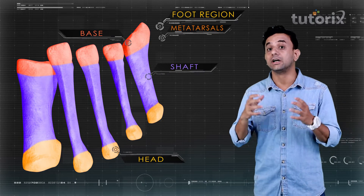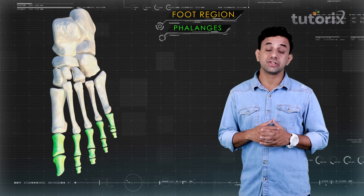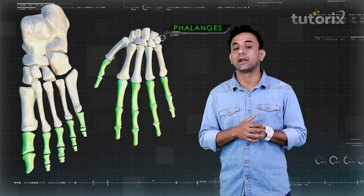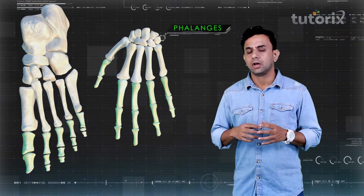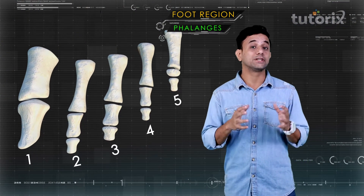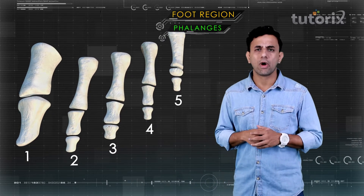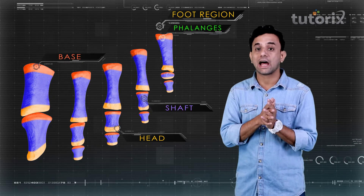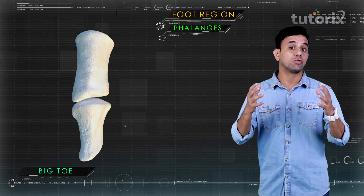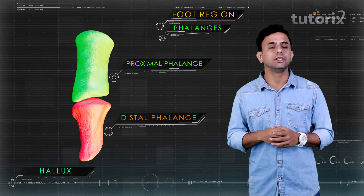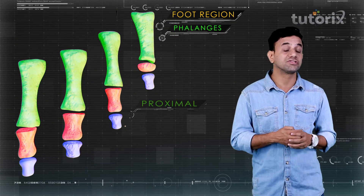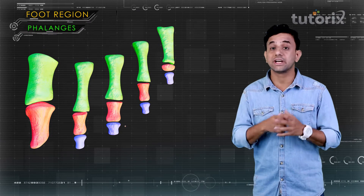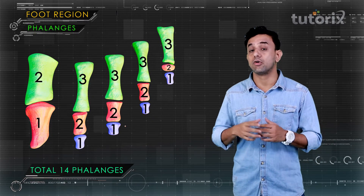The phalanges comprise the distal component of the foot and resemble those of the hand both in number and arrangement. The toes are numbered one to five beginning from the big toe, from medial to lateral. Each phalanx consists of a proximal base, an intermediate shaft, and a distal head. The great or big toe, called the hallux, has two phalanges: proximal and distal. The other four toes each have three phalanges: proximal, middle, and distal. The phalanges formula for the human foot is 2-3-3-3-3, making 14 phalanges in all.